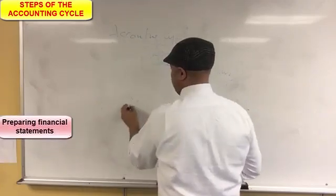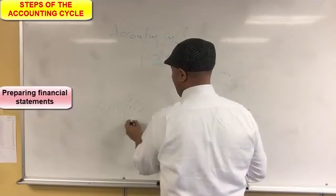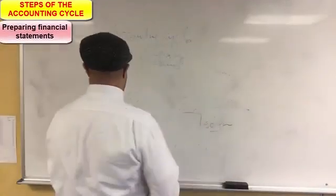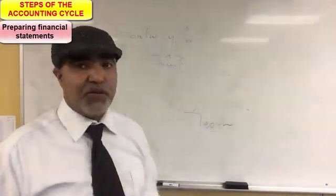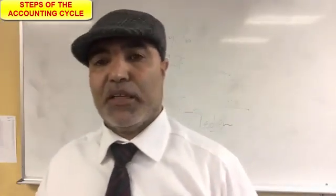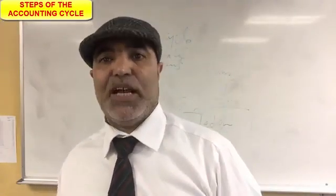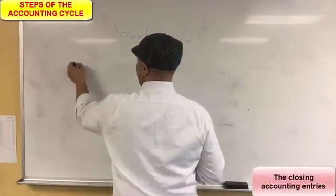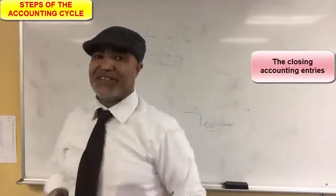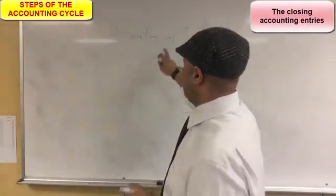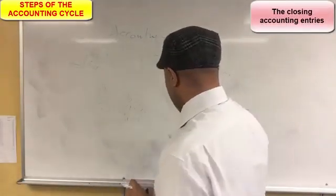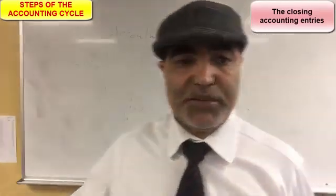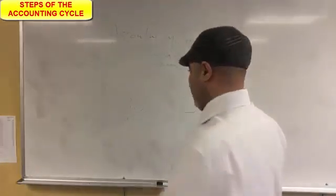The financial statements include the balance sheet, income statement, and cash flow statement. After this, we close the fiscal year or the period and make the closing entries. Closing entries are the final step of the accounting cycle.